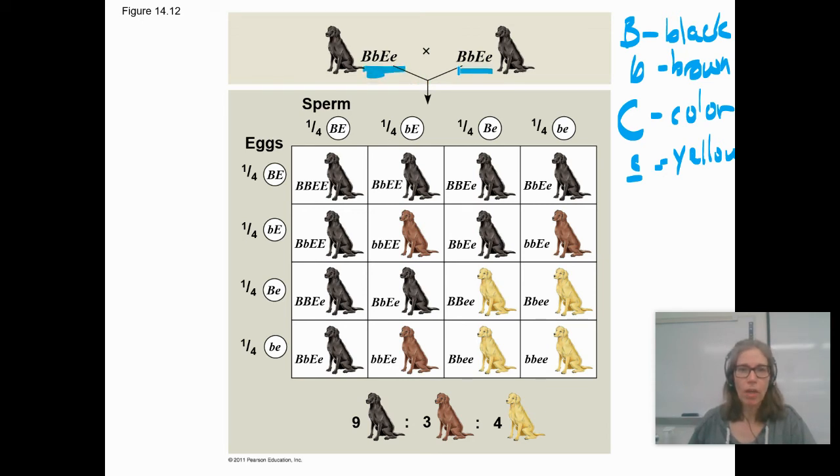Let's say you have parents who are heterozygous for both traits. We've done these crosses before. If you're heterozygous for two traits, mated with someone who's heterozygous for two traits, you are supposed to get a 9 to 3 to 3 to 1 ratio.